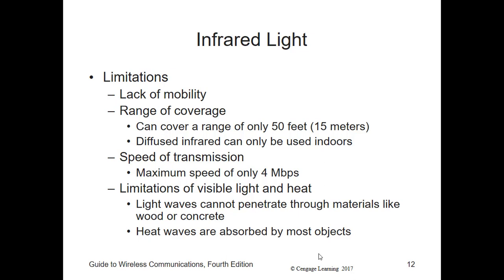The second limitation is range. Directed infrared systems with line-of-sight cannot be used where anything could obstruct the beam — like someone standing in front of your remote control. Due to the angle of deflection, diffused infrared can cover about 50 feet (15 meters), and because it requires a reflection point it can only be used indoors. Another significant limitation is transmission speed: diffused infrared can send data at maximum speeds of 4 Mbps, because the wide beam angle loses energy as it reflects around the room — a phenomenon called attenuation.